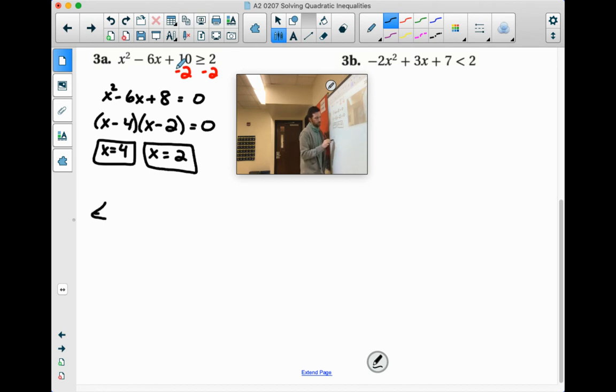These are kind of our critical points here that we have to consider. So let's say this is 0, 1, 2, 3, 4, 5.